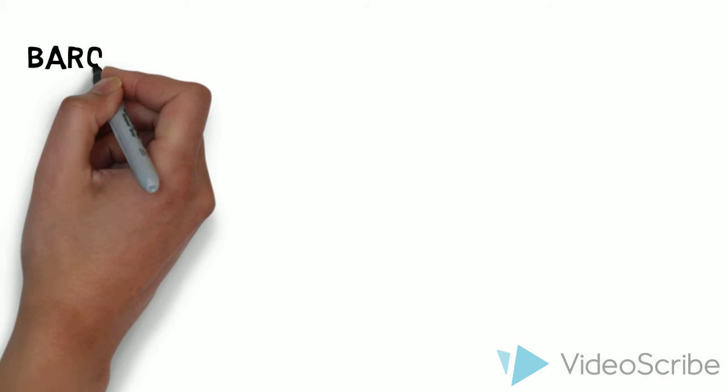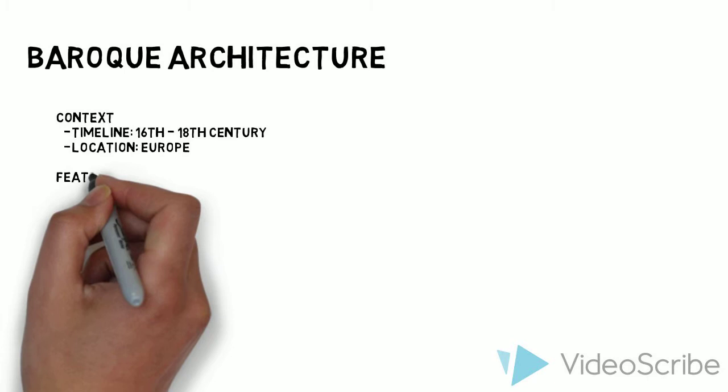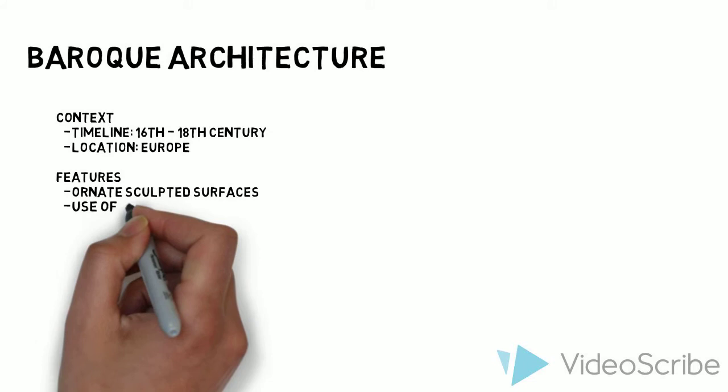This is Art in Architecture by Jason Cheng. We're going to start with Baroque architecture. It began in the 16th century and lasted until the 18th century. Its primary location was Europe, and it apexed in France.